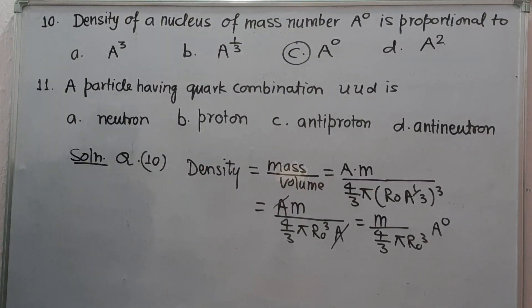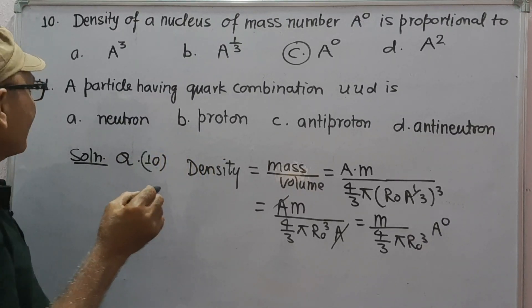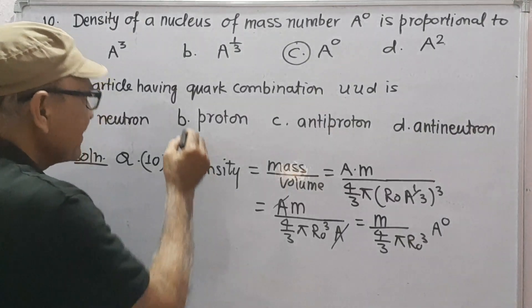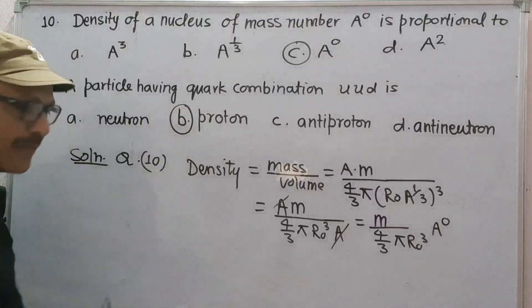Next question 11: a particle having quark combination U, U, D is - these are the options. We know that the proton has quark combination U, U, D. Therefore the correct option will be B.